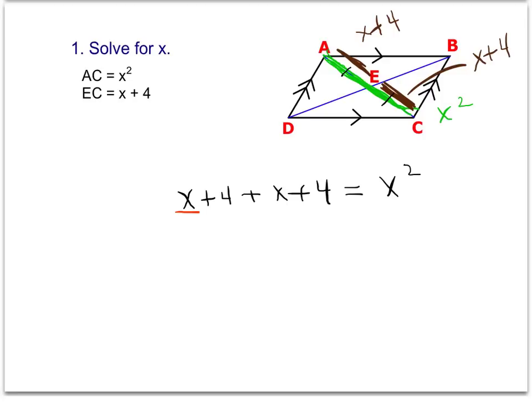First, we're going to want to combine like terms on each side. X plus x is 2x, and 4 plus 4 is 8, equal to the x squared.